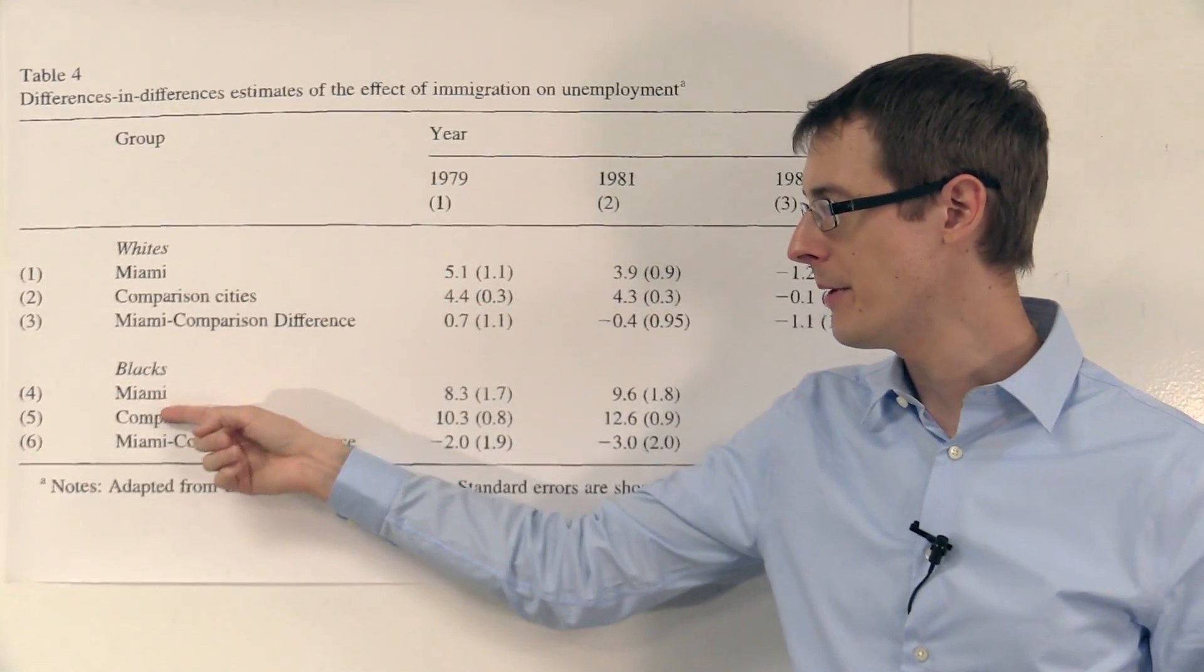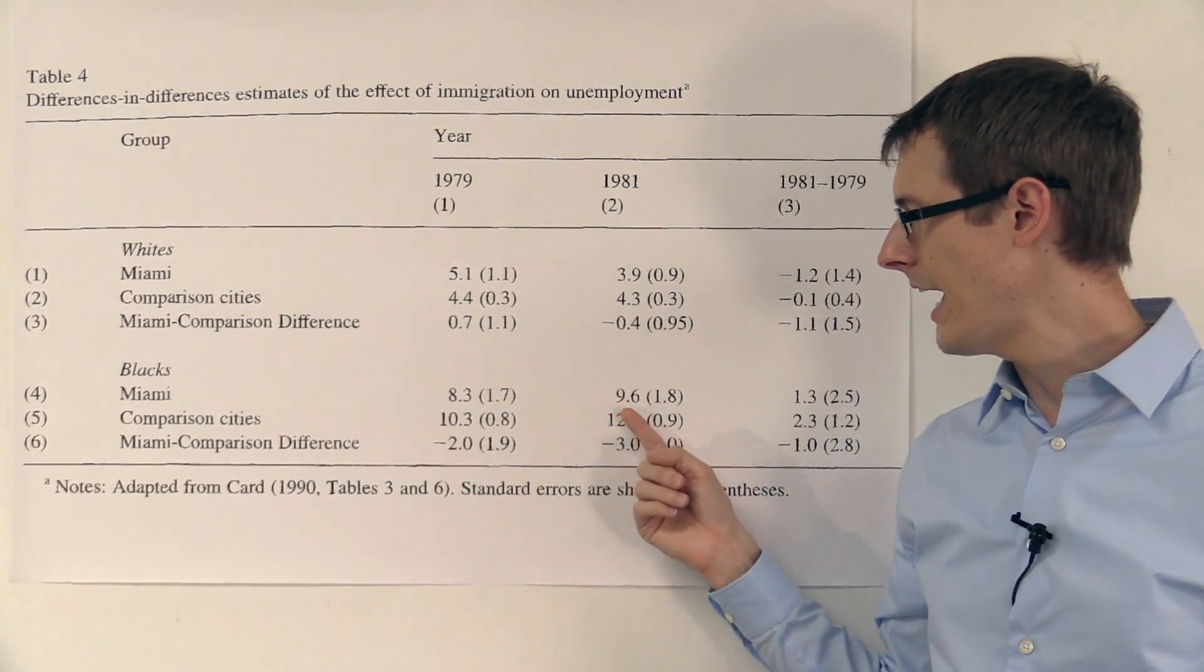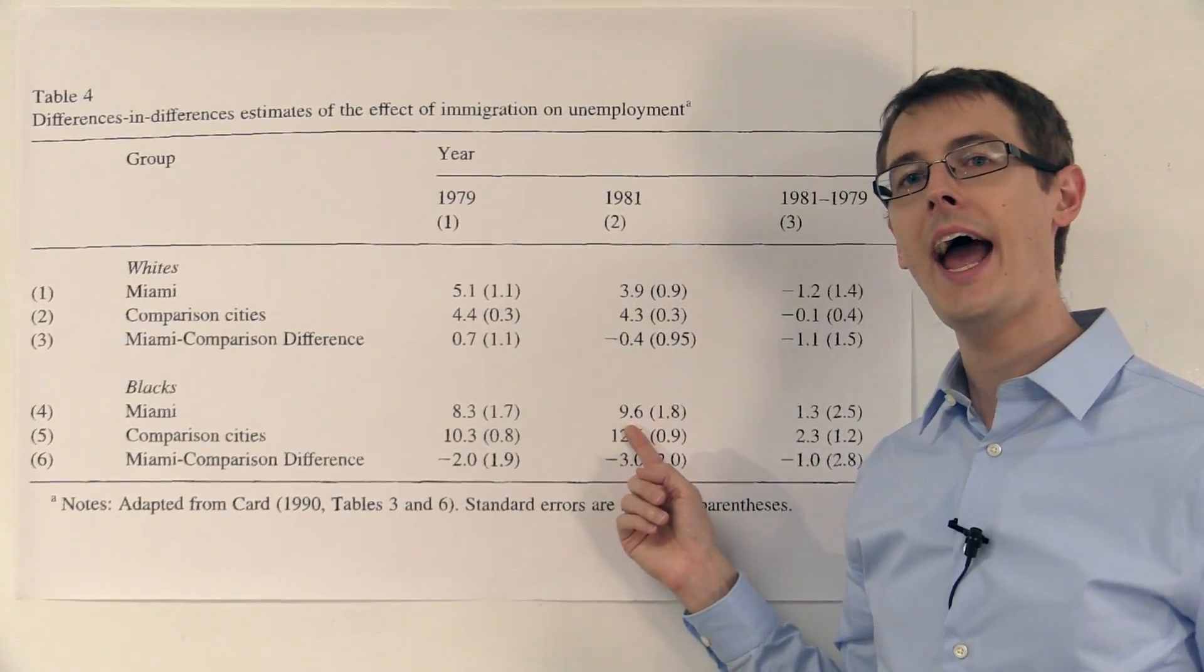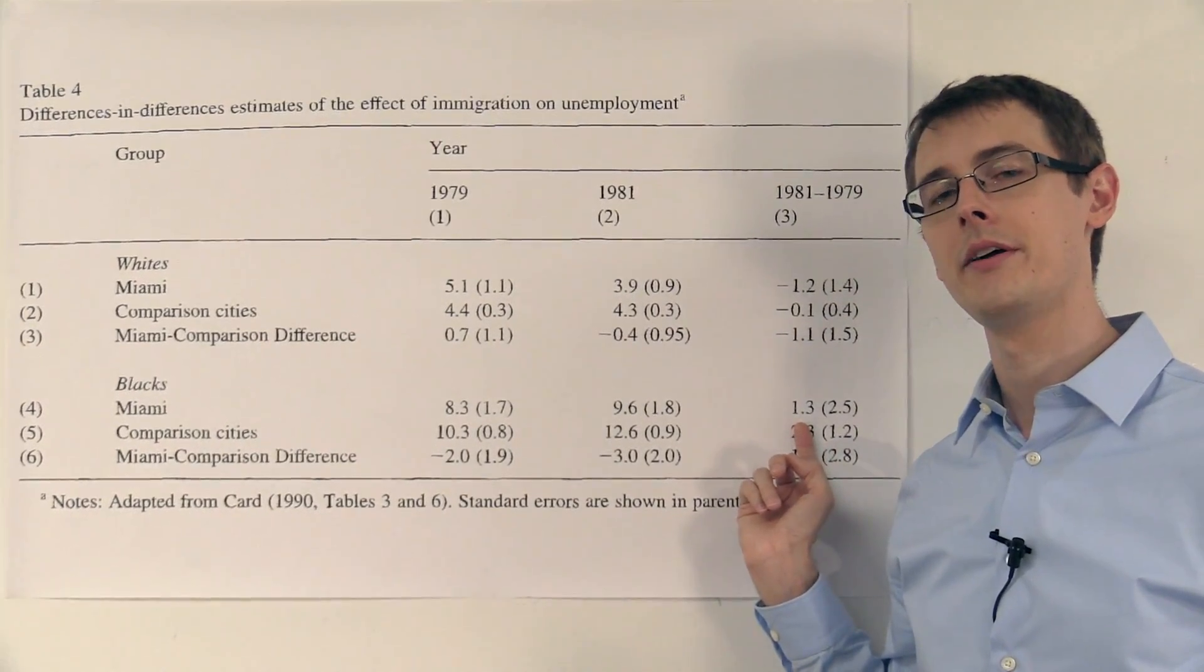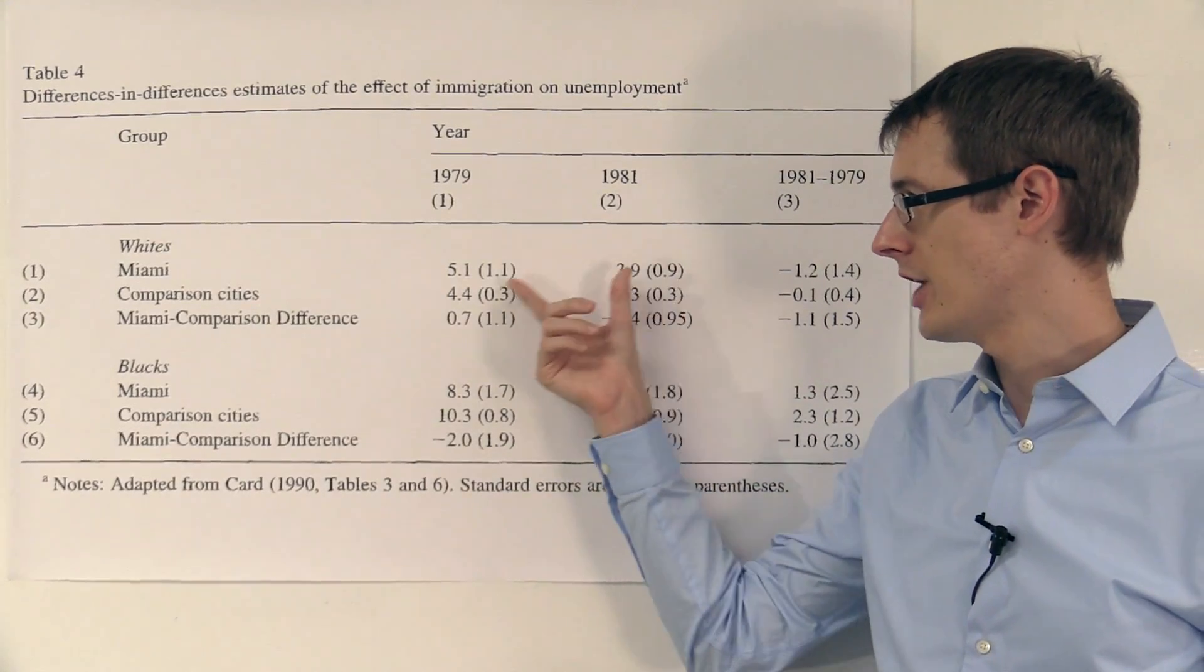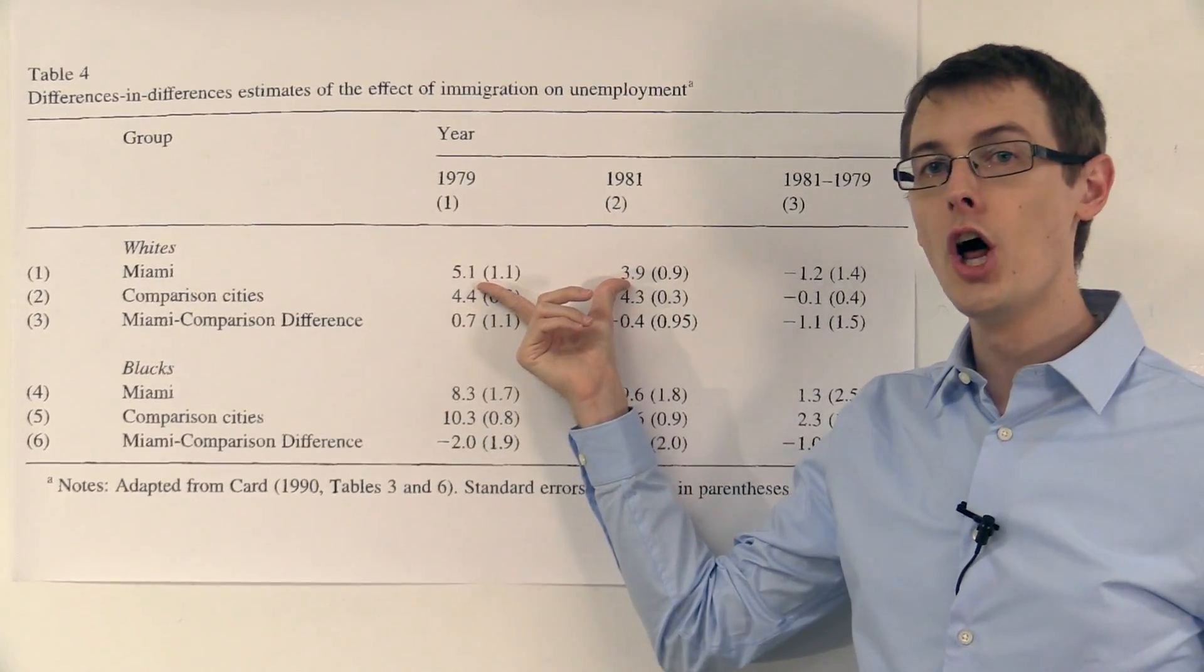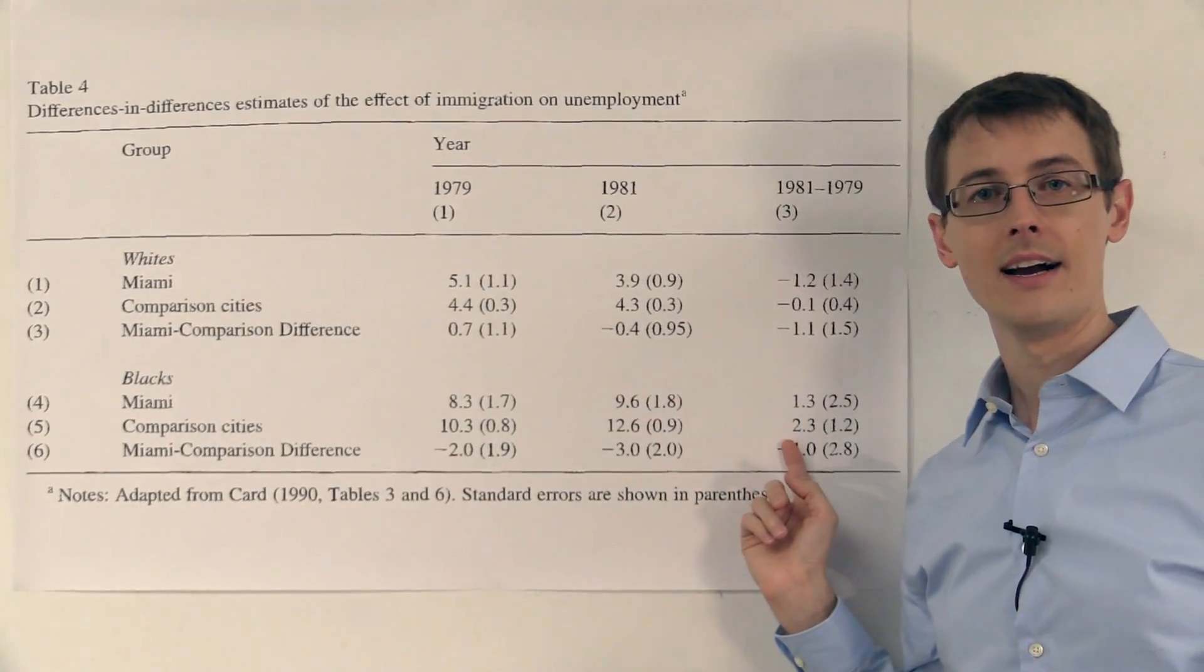If we look at blacks living in Miami, it was 8.3% before immigration and 9.6% after immigration, an increase of 1.3%. So if we just did a before and after comparison, these numbers would suggest that immigration lowered the unemployment rate for whites, but increased it for blacks.